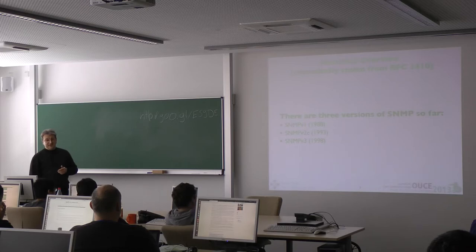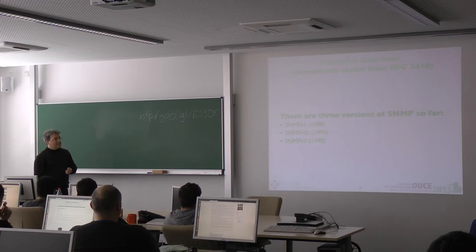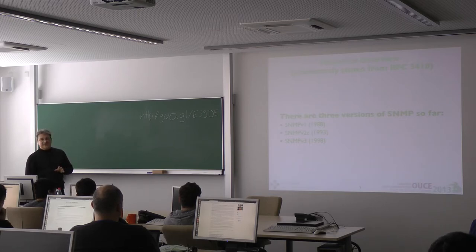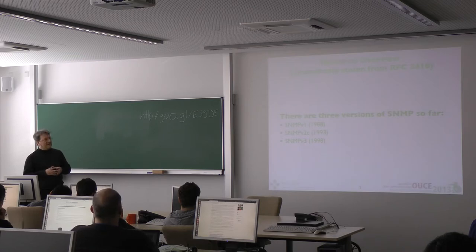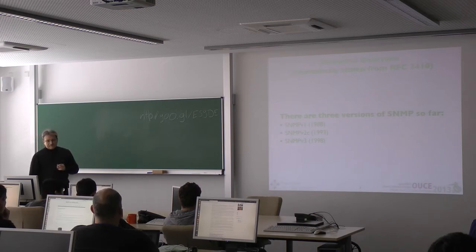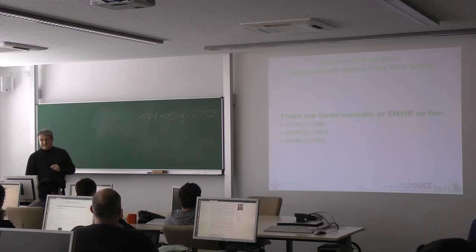Obviously, there have been three versions of SNMP. SNMPv1 was created in 1988 because there was a need to manage network components. It became clear rather soon that SNMPv1 had shortcomings, so SNMPv2 was created in 1993 with security in mind — it was really meant to be a security enhancement. And five years later, in 1998, because SNMPv2c failed in the security aspect, came SNMPv3.